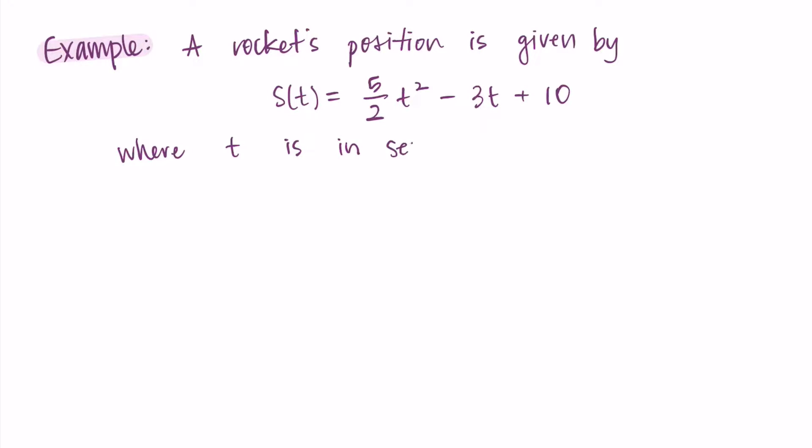So again we have the position here, and let's say that t is measured in seconds and s(t) is measured in feet. I want us to find the position, the velocity, and the acceleration of the rocket after two seconds.